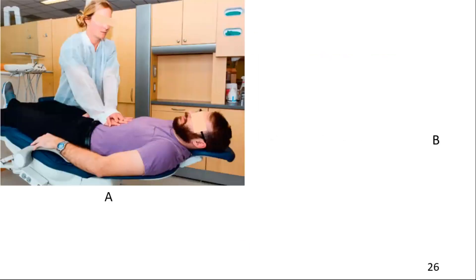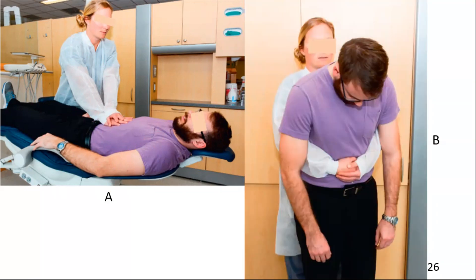This photograph shows how to do abdominal thrusts on an unconscious patient who has something blocking their airway. Place the chair in a lying down position, then put the heel of your right palm on the abdomen just below the xyphoid process. Keeping your elbow straight, put your left hand over your right hand for more force. Quickly push your arms into the patient's abdomen directing the force downward and upward. This second photograph shows the correct way to do the Heimlich maneuver, with the rescuer standing behind the patient, hands on the abdomen below the ribcage, pulling inward to dislodge the obstruction.